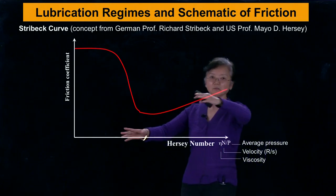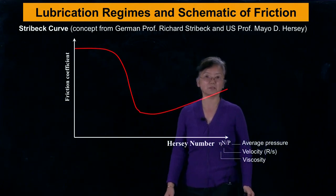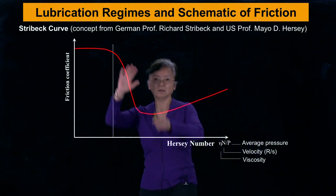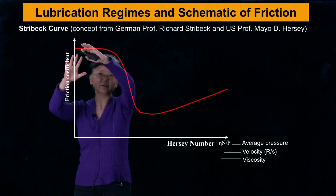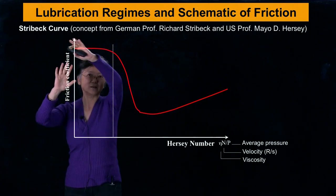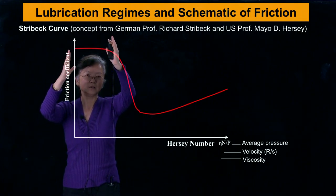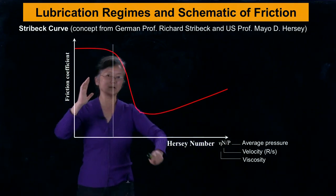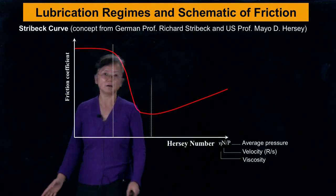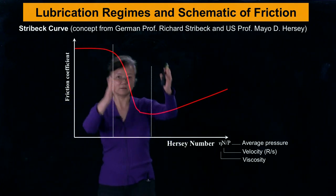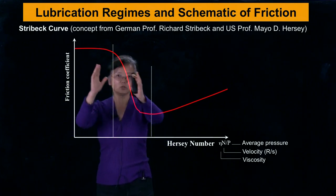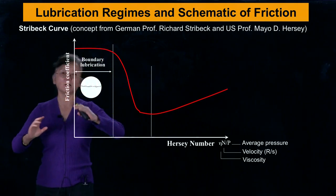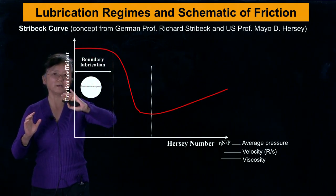This curve can be divided into different regimes — that's what the concept is. The first regime is where the friction coefficient is almost constant; it appears independent of conditions. We call this boundary lubrication.